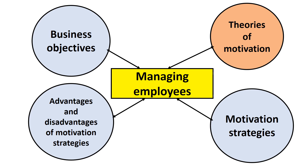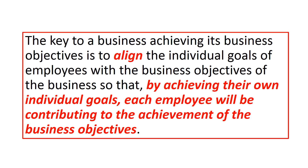Each of these three theories of motivation proceeds on the basis that employees will be motivated to achieve the objectives of a business if the achievement of those objectives is consistent with employees satisfying their own needs or achieving their own goals. Put another way, the key is to align the individual goals of each employee with the business objectives, so that by achieving their own goals each employee contributes to the achievement of the business objectives. The difference between the three theories is in their conception of what motivates employees.